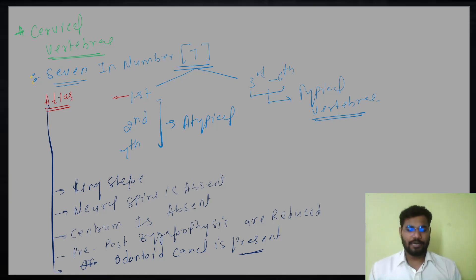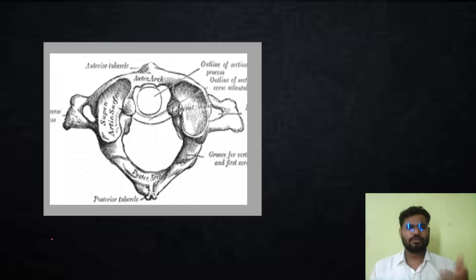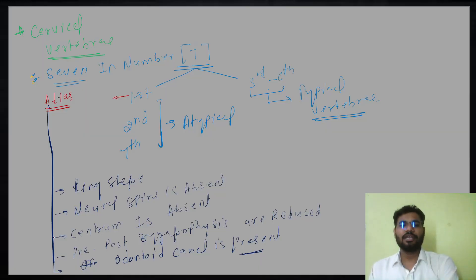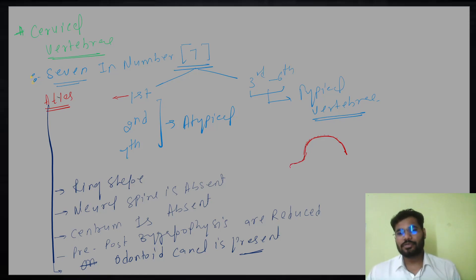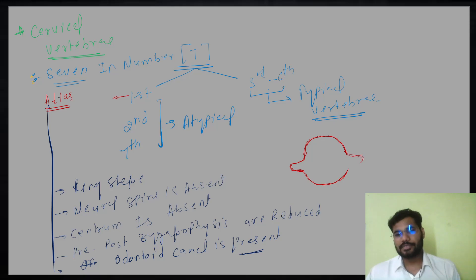Now let us see how the structure looks like. I will draw it for you. Basically, it is a ring-shaped structure. Because centrum is absent and pre and post zygapophysis are reduced, they are present but in reduced form. Neural spine is also absent. So it is looking like a ring.